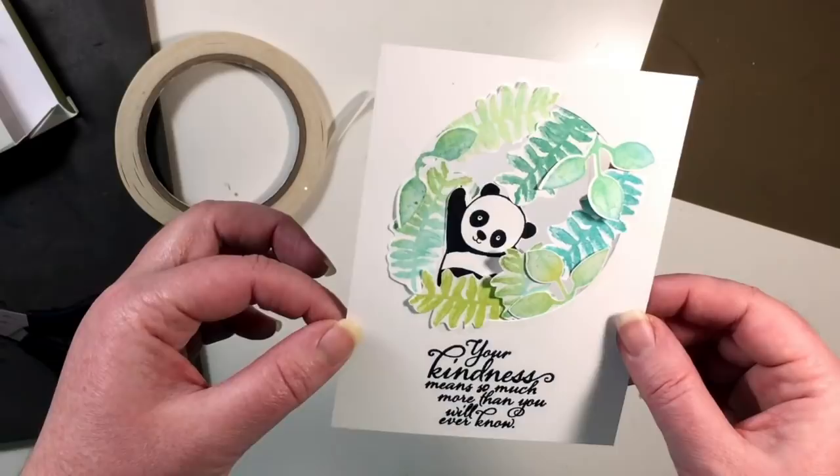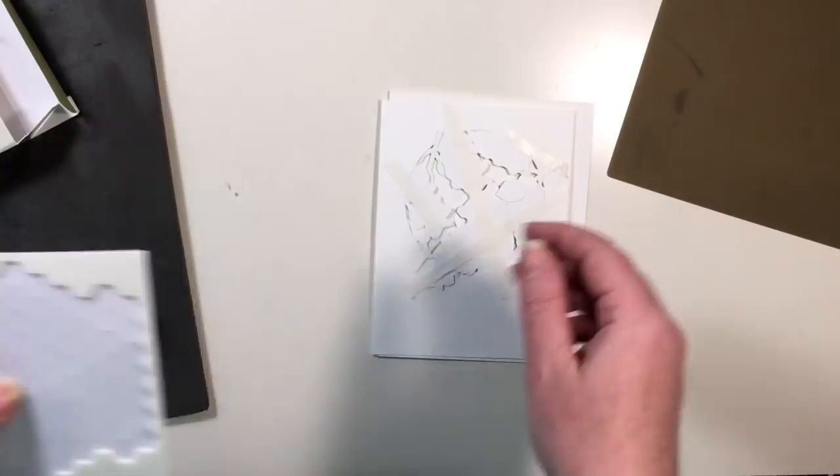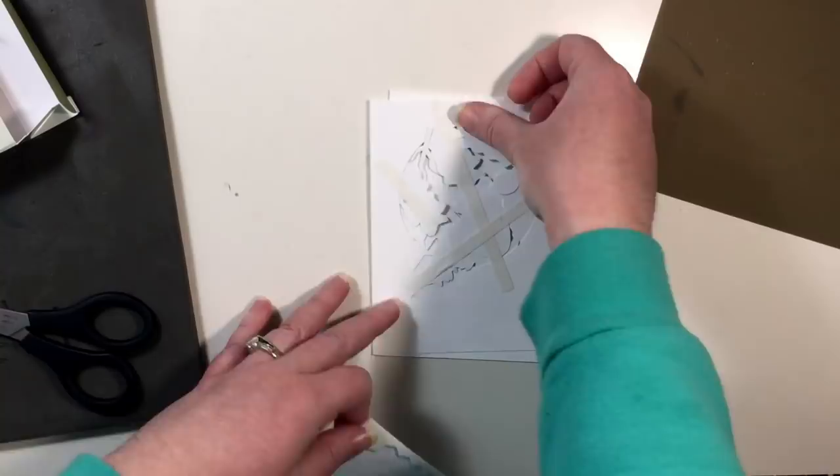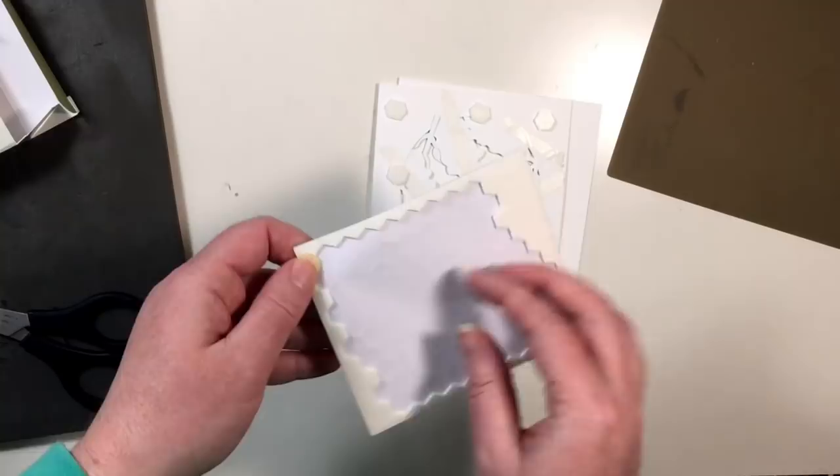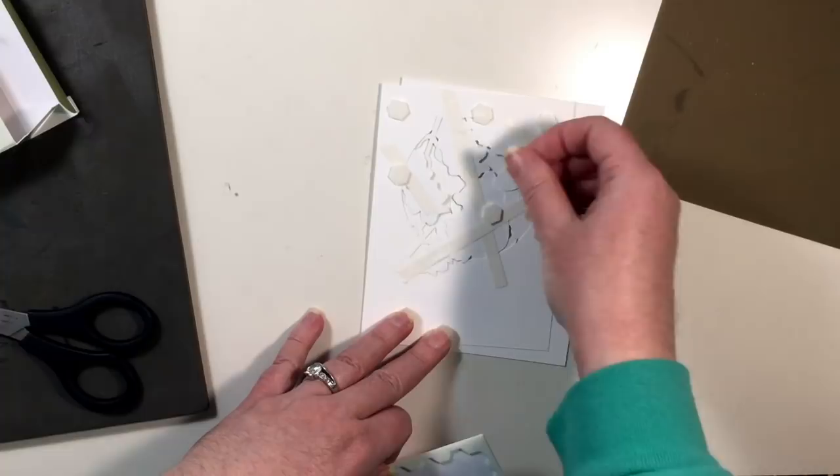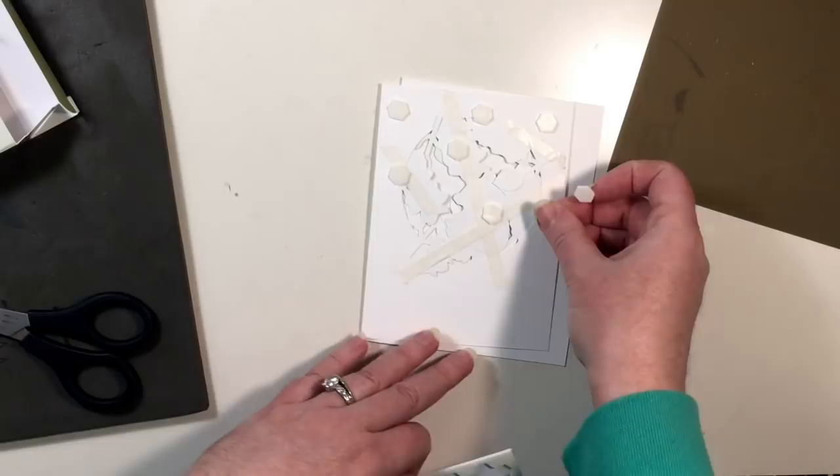All right now moment of truth when you pick it up and flip it around as long as none of your pieces fall out then you are good to go. So we're going to use our dimensionals to pop this up onto our card base and I like to use a lot of dimensionals you guys know this. So I'm just going to pop a few and by a few I mean almost the entire sheet all around even on the background of some of those ferns and leaves and that also helps it to kind of hold in place.